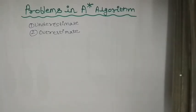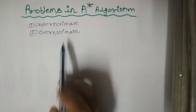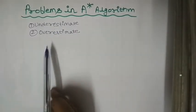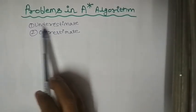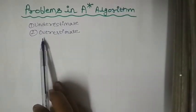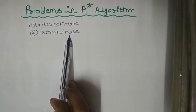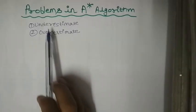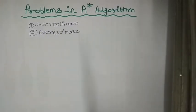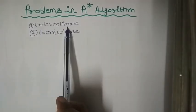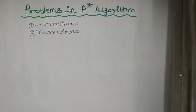In this video, I will explain the problems that you have to face in the A-star algorithm. The first one is underestimate and the second one is overestimate. In the heuristic function that we calculate, it can sometimes underestimate the value and can sometimes overestimate.